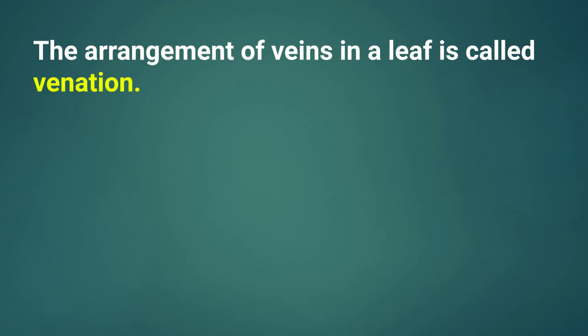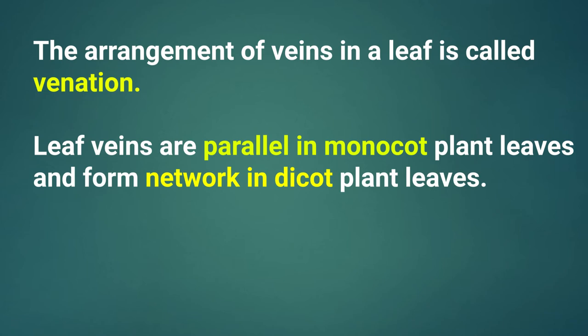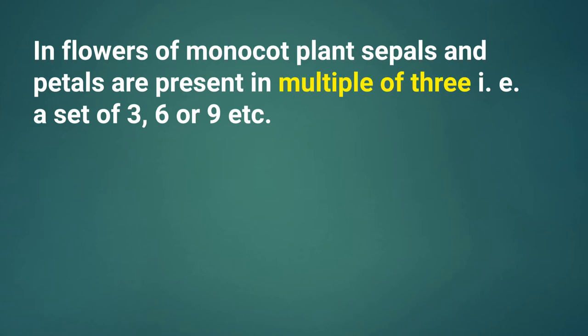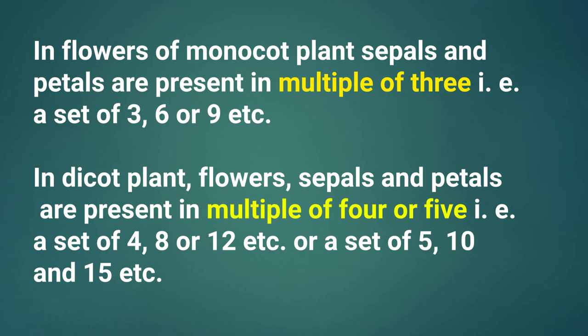Leaf veins are parallel in monocot plant leaves and form a network in dicot plant leaves. In flowers of monocot plants, sepals and petals are present in multiples of three — a set of three, six, nine, etc. In dicot plant flowers, sepals and petals are present in multiples of four or five — that is a set of four, eight, or twelve, etc., or a set of five, ten, fifteen, etc.